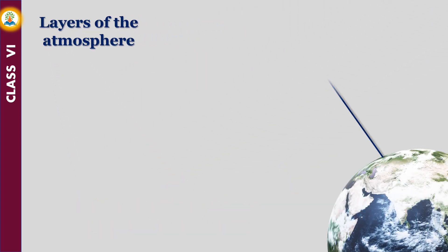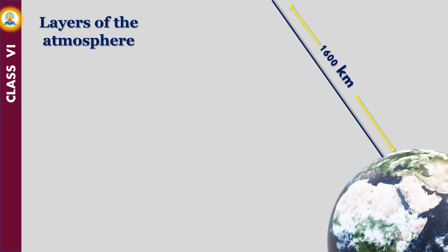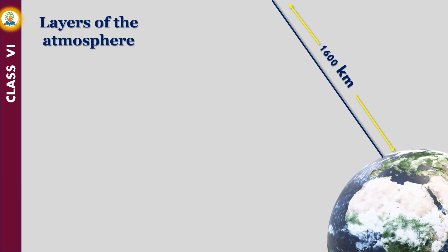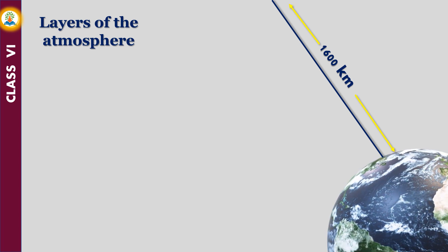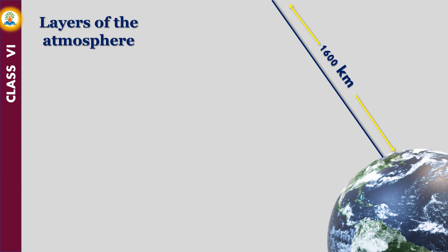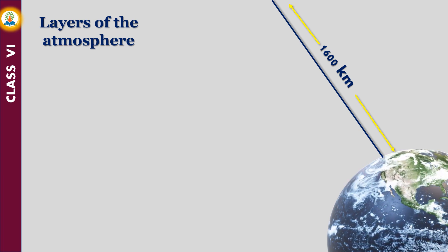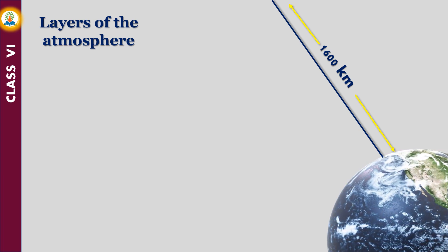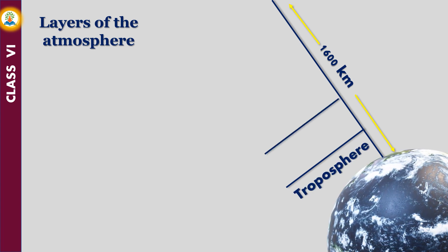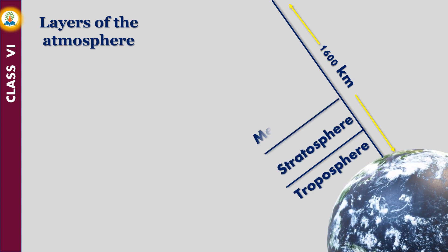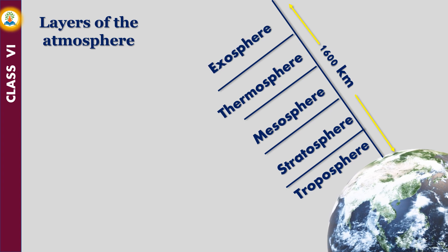The atmosphere extends approximately up to 1600 kilometers above the surface of the earth. It is divided into five layers based on composition, temperature, and other properties. Starting from the surface of the earth, the layers are called troposphere, stratosphere, mesosphere, thermosphere, and exosphere.